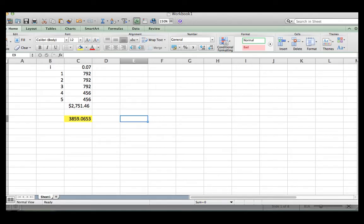Okay, so let's go ahead and do this in Excel. Remember, you have the cash flow, 792 for the first three years, and then you have the last two years, 456. In Excel, look how you do it.